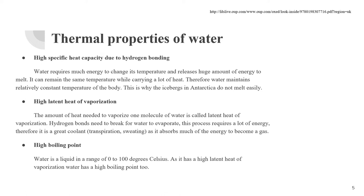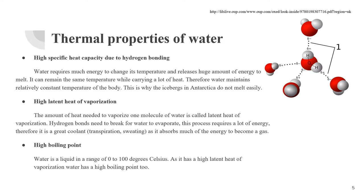The latent heat of vaporization is the amount of energy that must be added to a liquid substance to transform a quantity of that substance into a gas. Hydrogen bonds need to break for water to evaporate, and this process requires a lot of energy. Therefore, it is a great coolant — transpiration or sweating — as it absorbs much of the energy to become a gas. At its high boiling point, water is a liquid in a range of 0 to 100 degrees Celsius. As it has a high latent heat of vaporization, water has a high boiling point too.